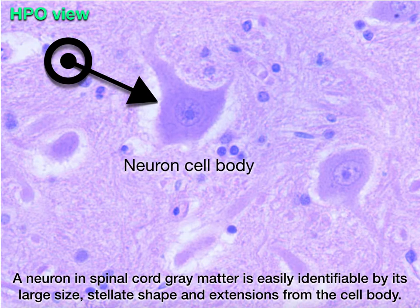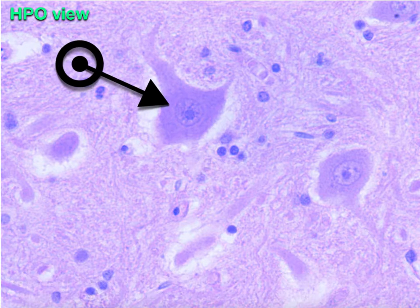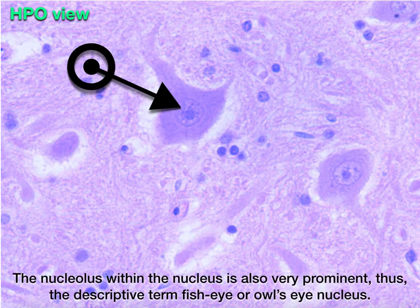A neuron in the spinal cord gray matter is easily identified by its large size, cell shape, and extensions from the cell body. The nucleolus within the nucleus is also very prominent, thus the descriptive term fisheye or owl's eye nucleus.